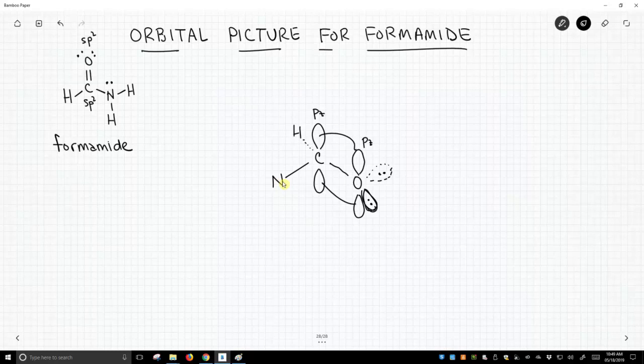So the nitrogen lone pair actually is going to be in a p orbital. This nitrogen is sp2 hybridized. It has a leftover p orbital, and that leftover p orbital is going to be a pz, so let's just drop that lone pair right in that pz.